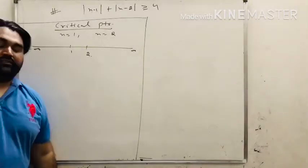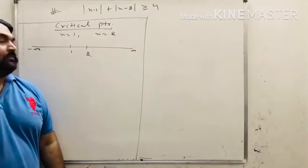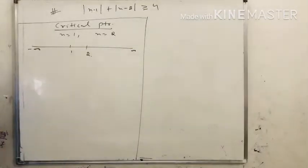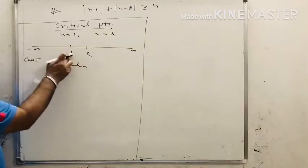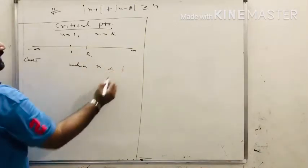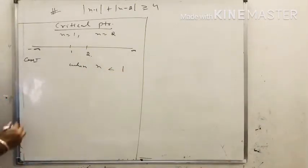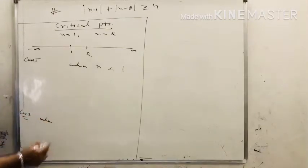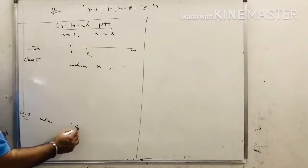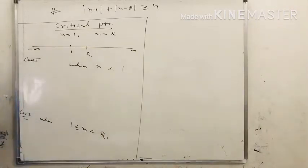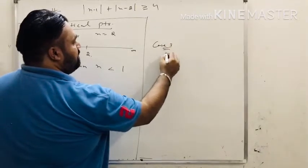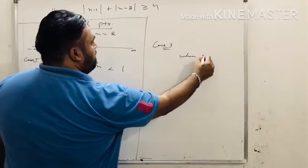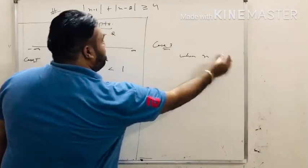We divide into three cases. Case 1: when x is less than 1. Case 2: when the value of x is between 1 and 2. Case 3: when x is greater than or equal to 2. The whole concept depends on these critical points.